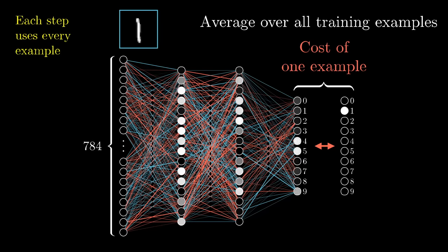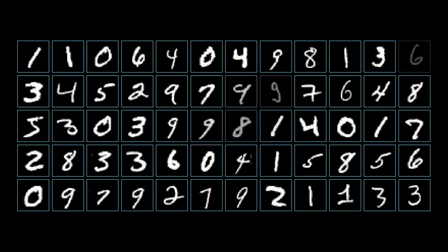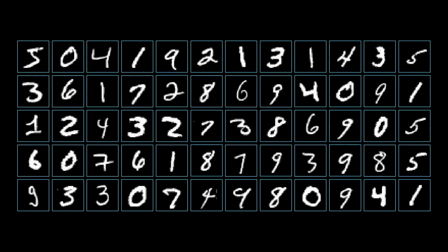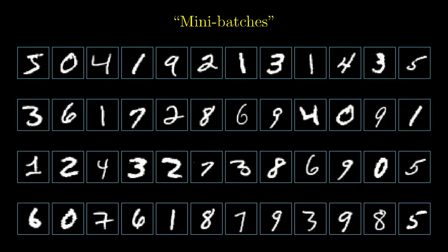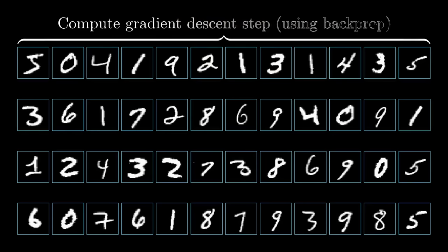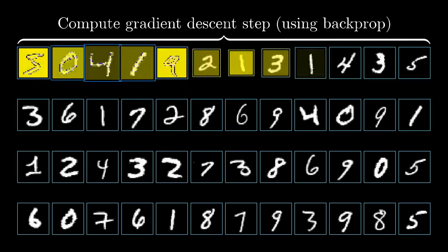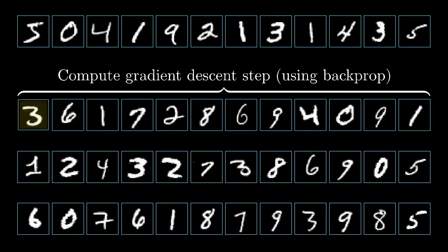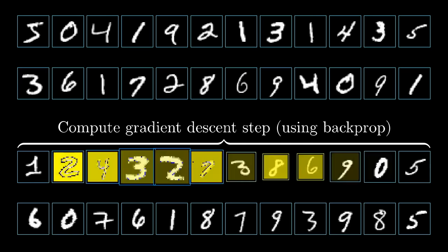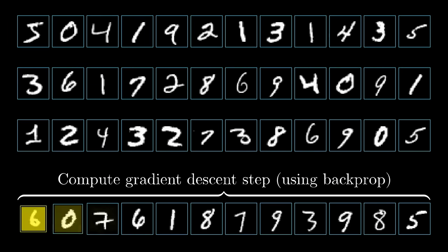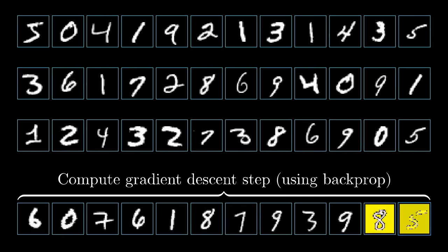By the way, in practice, it takes computers an extremely long time to add up the influence of every single training example, every single gradient descent step. So here's what's commonly done instead. You randomly shuffle your training data and then divide it into a whole bunch of mini-batches, let's say each one having a hundred training examples. Then you compute a step according to the mini-batch. It's not going to be the actual gradient of the cost function, which depends on all of the training data, not this tiny subset. So it's not the most efficient step downhill, but each mini-batch does give you a pretty good approximation, and more importantly, it gives you a significant computational speedup.